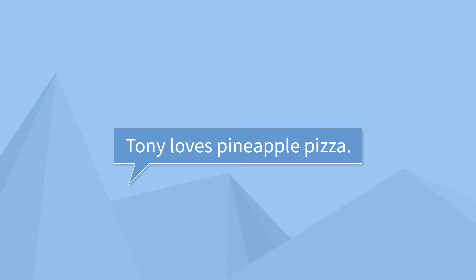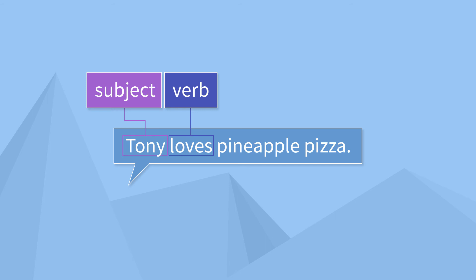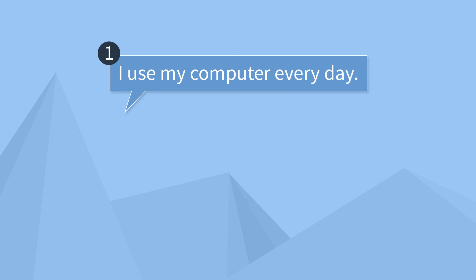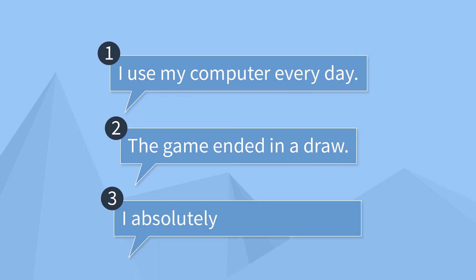Tony loves pineapple pizza. See if you can answer the following questions. What is the verb in this sentence? The verb is 'loves.' What is the subject? The subject is 'Tony.' Is the verb transitive or intransitive? This is a transitive verb. If it's transitive, what's the object? The object is 'pineapple pizza.' Now see if you can answer the same questions for: 'I use my computer every day,' 'The game ended in a draw,' and 'I absolutely love this course.'